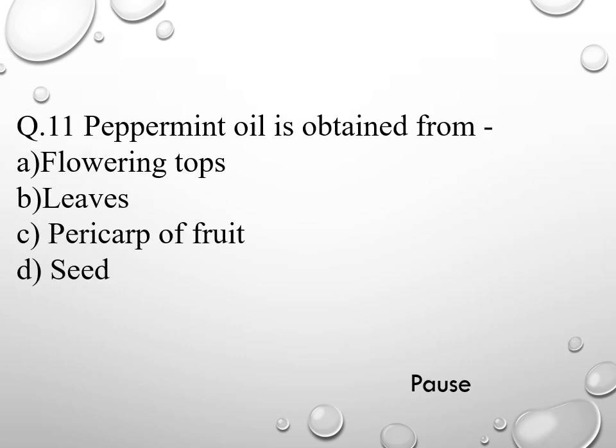Question 11. Peppermint oil is obtained from: option A flowering top, option B leaves, option C pericarp of fruit, and option D seed. The right answer is flowering top. So peppermint oil is obtained from the flowering top of the plant.